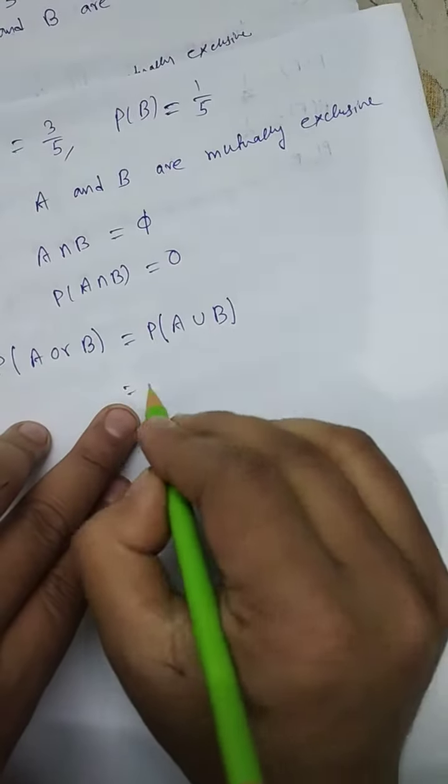So here, P(A) is 3/5 plus P(B) which is 1/5 minus P(A intersection B) which is 0. So 3/5 plus 1/5 equals 4/5.